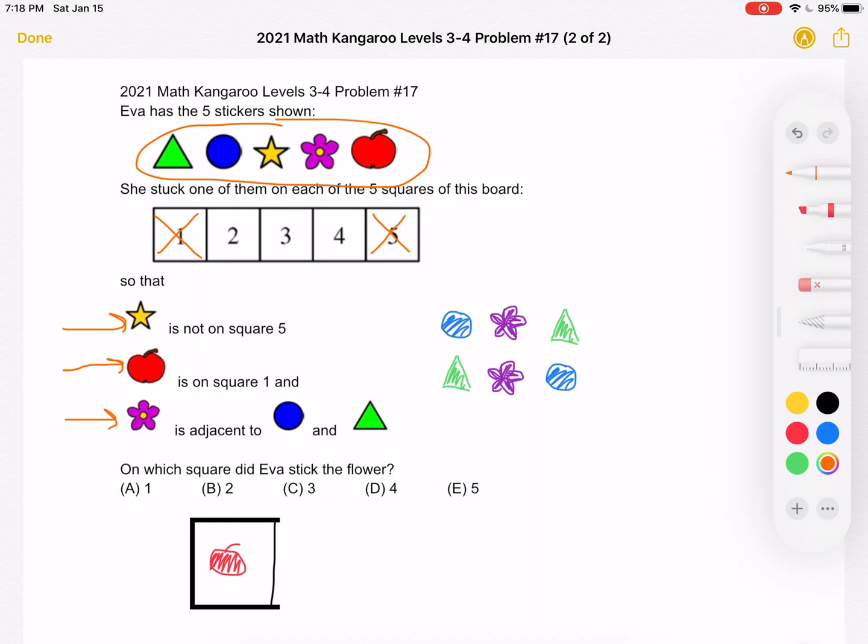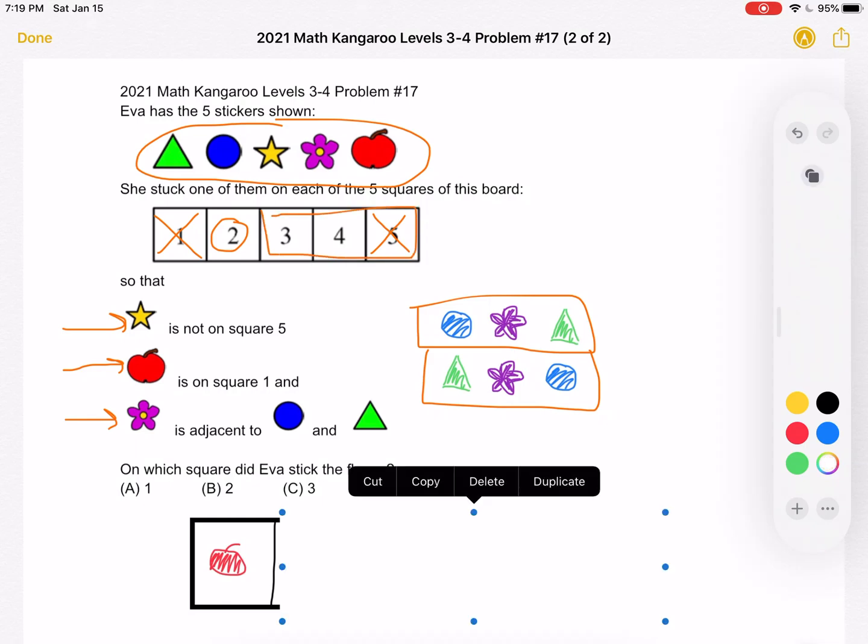However, the star cannot be on position three or four because if it was, we wouldn't have room to fit this set of three that we know will be there. So the star must be on two so that the set of three, the flower, circle, triangle, can fit in the remaining three boxes. So the star is in position two.